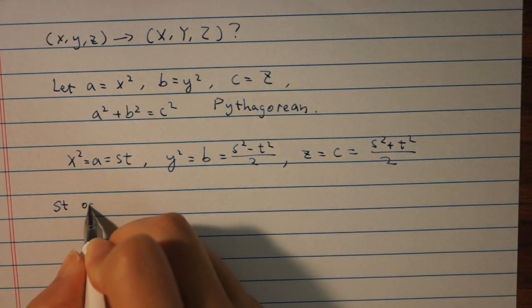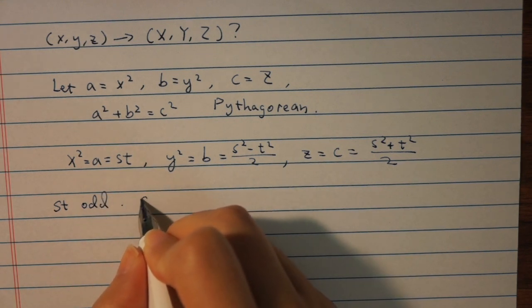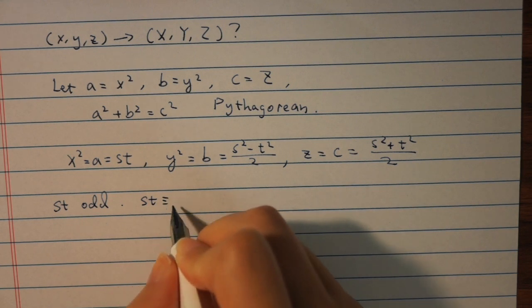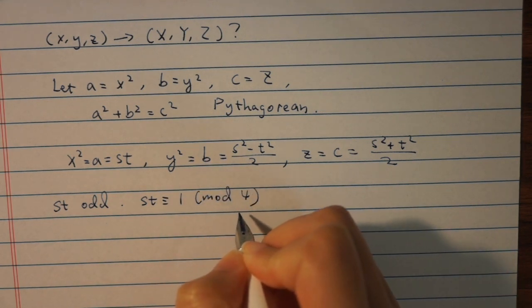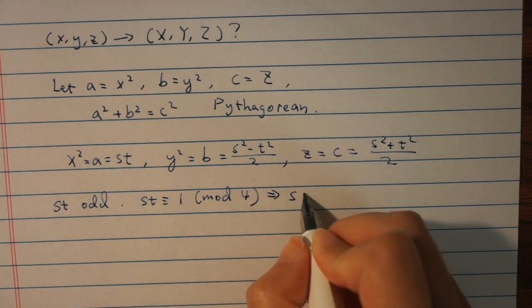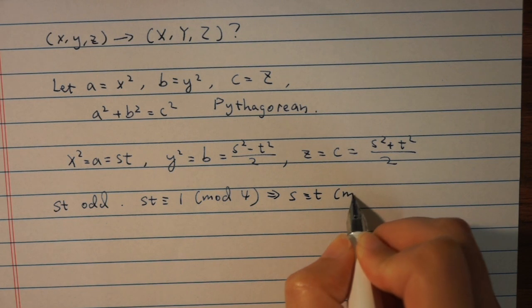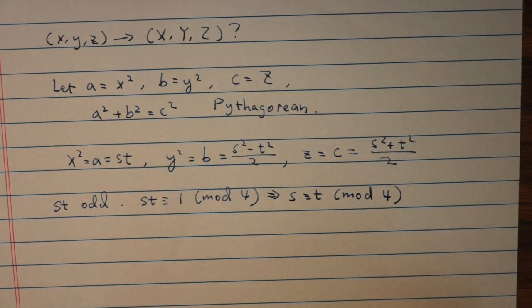Since s and t are odd, st is odd and it's equal to a square, we must have st is congruent to 1 mod 4. Then s is congruent to t mod 4 because s and t are either both congruent to 1 mod 4 or congruent to 3 mod 4.